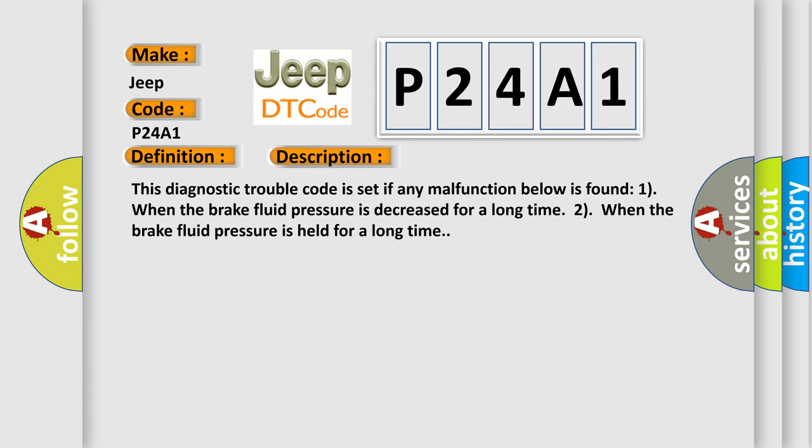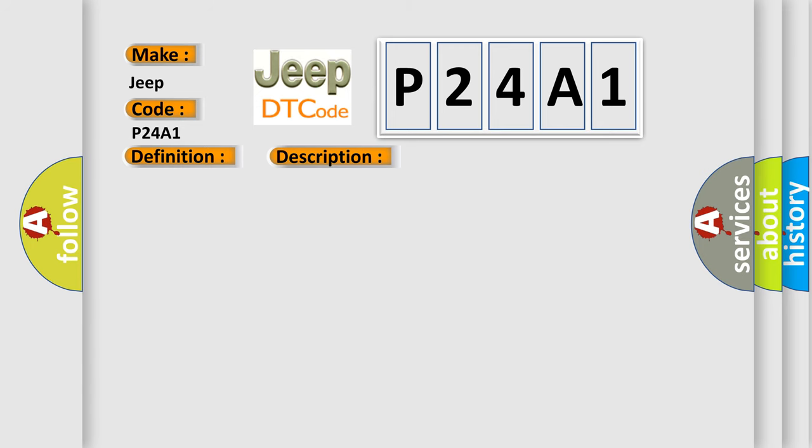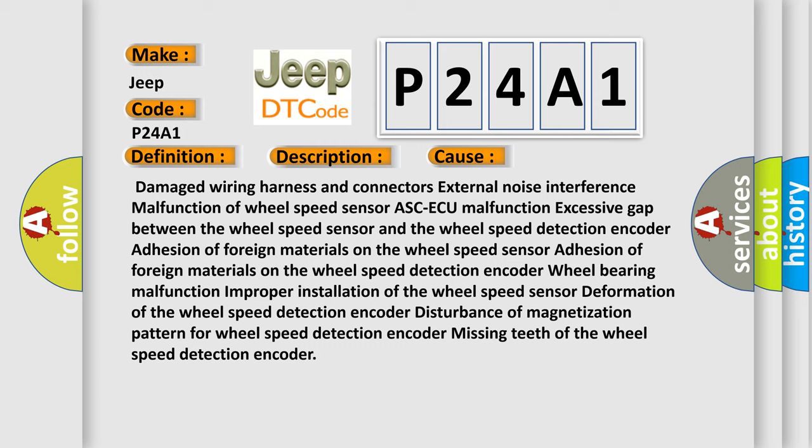This diagnostic error occurs most often in these cases: damaged wiring harness and connectors, external noise interference, malfunction of wheel speed sensor ABS/ECU malfunction, excessive gap between the wheel speed sensor and the wheel speed detection encoder, adhesion of foreign materials on the wheel speed sensor, adhesion of foreign materials on the wheel speed detection encoder, wheel bearing malfunction, improper installation of the wheel speed sensor, deformation of the wheel speed detection encoder, disturbance of magnetization pattern for wheel speed detection encoder, missing teeth of the wheel speed detection encoder.